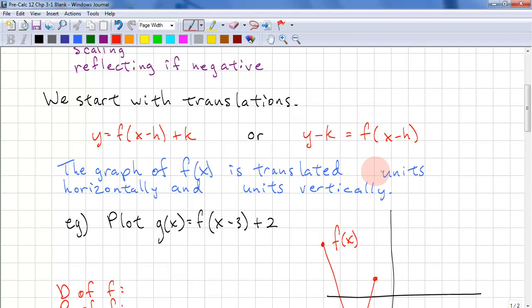f of x is translated by h units horizontally and we have positive to the right, and k units vertically, and positive is up.